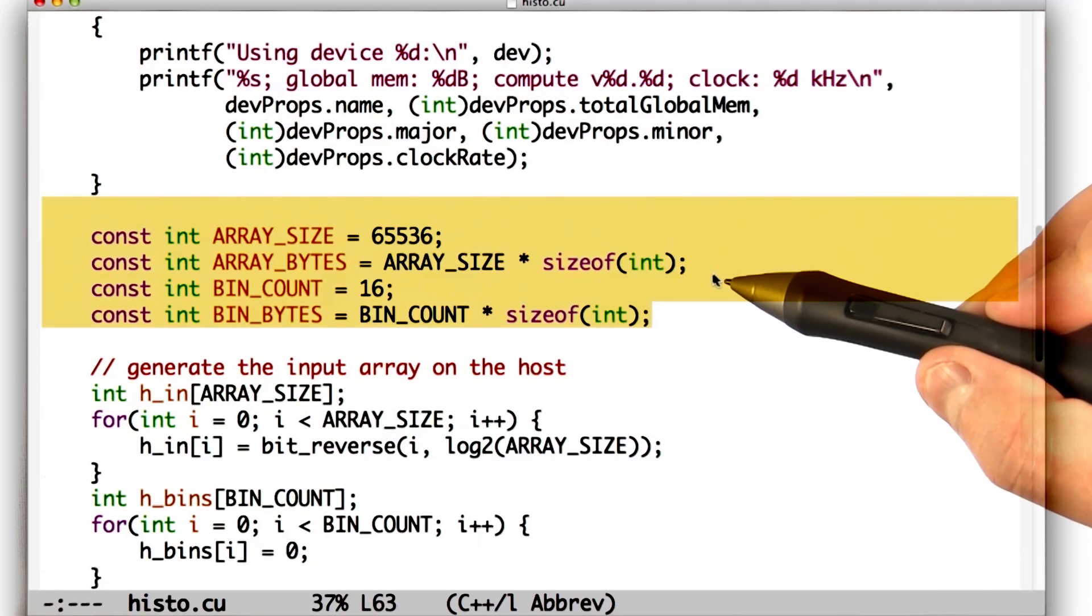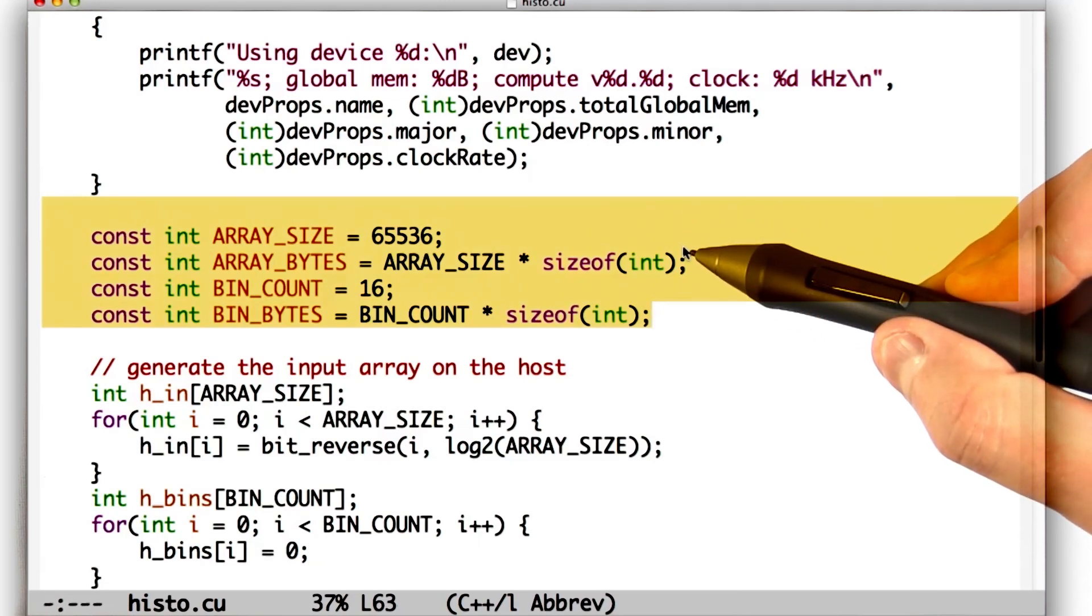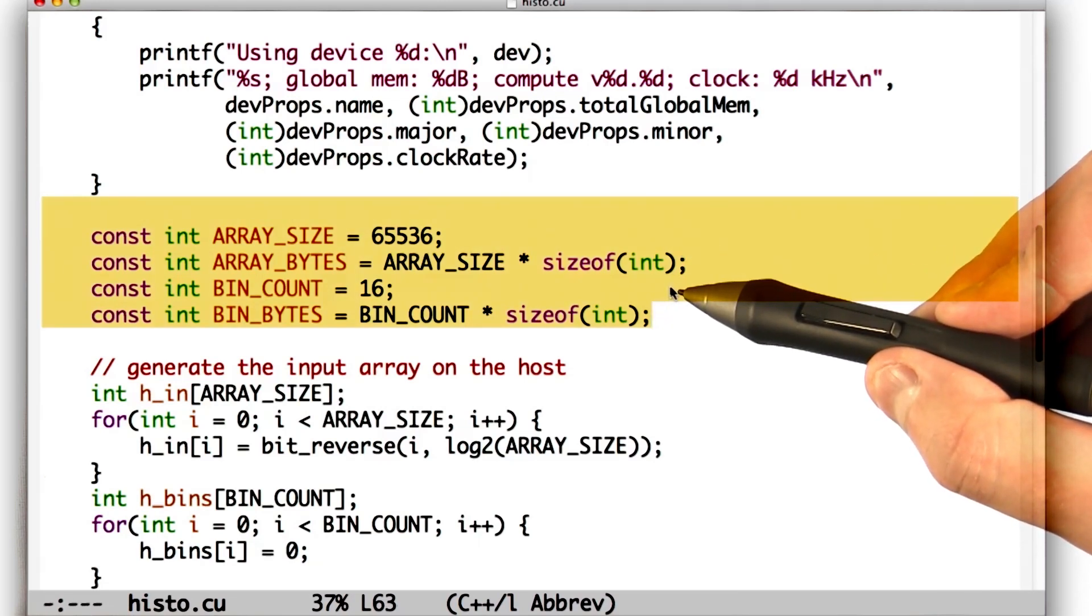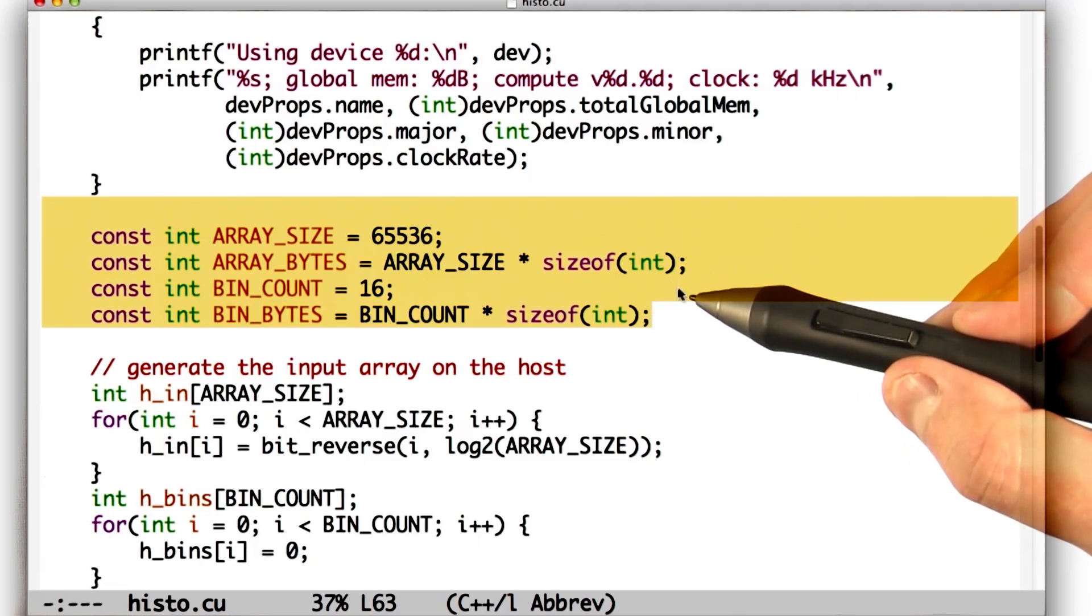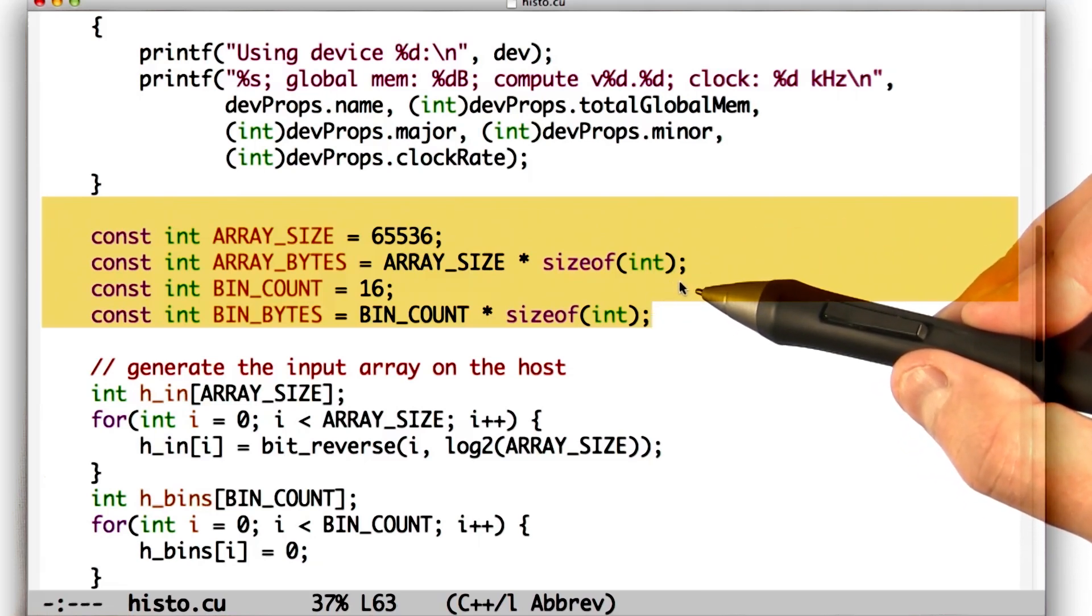If we scroll down to the main routine here, we see that we have 65,000 elements that we're going to classify into 16 bins. So we would expect 4,096 items per bin. What happens when we run this?